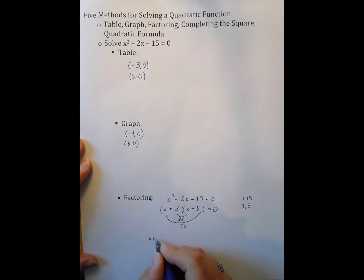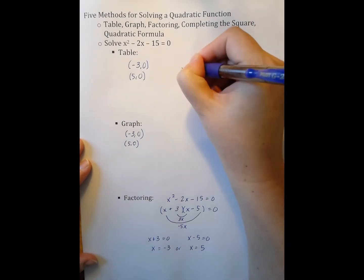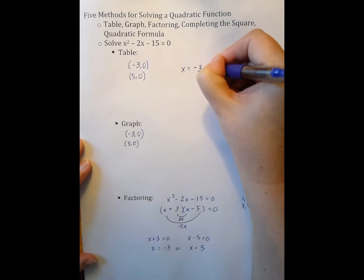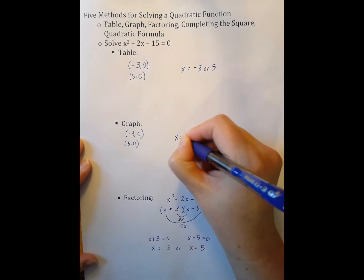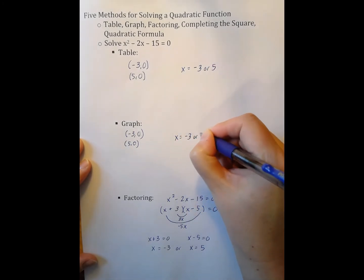So now I have to solve this in order for two quantities being multiplied to equal 0. One of them must equal 0. So I have x equals negative 3 or x equals 5. So it also means that up here I could write my answers as x equals negative 3 or 5 and x equals negative 3 or 5.